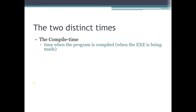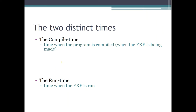There are always two distinct times in the life cycle of any C++ program. The first is called compile time — this is when the program is being compiled, meaning when the exe file is being generated from our program text. The second is called runtime — this is when the exe file is actually being run. Compile time generates the exe file; runtime executes or runs it. We must think about both of these times separately.